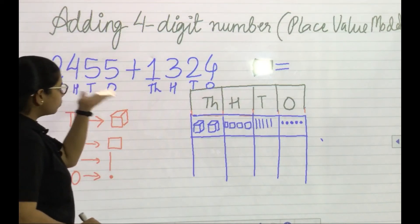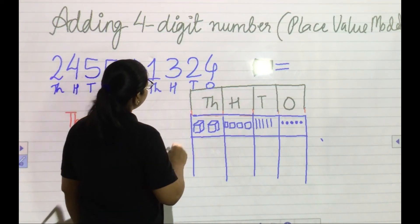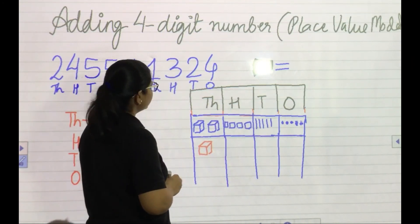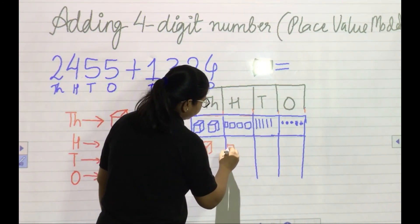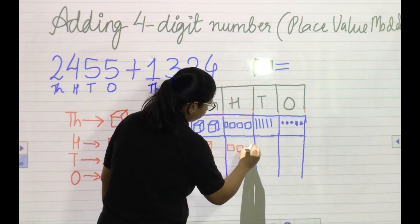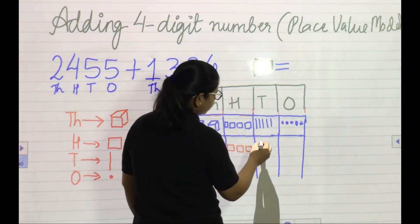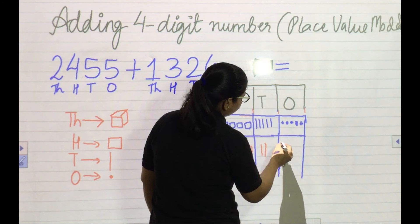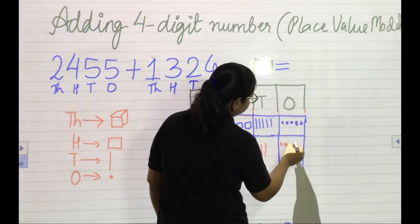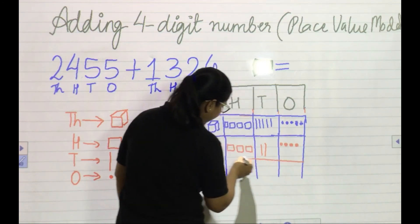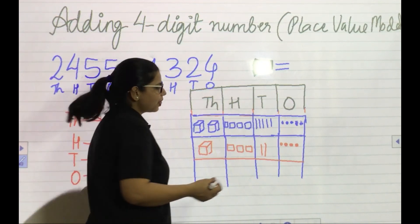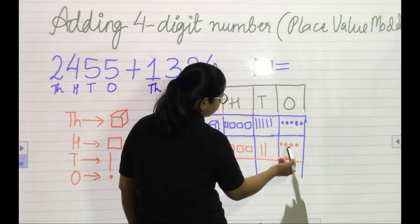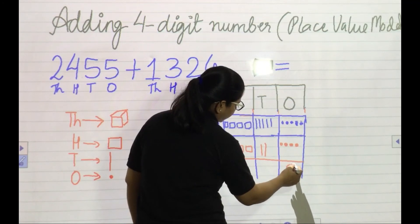The next number is 1324. One cube for 1000, three squares for 300. Then two tens — two bars — and four ones: one, two, three, four. Now count them up: dots — one, two, three, four, five, six, seven, eight, nine. Nine dots.